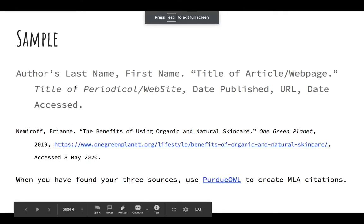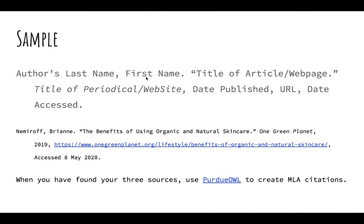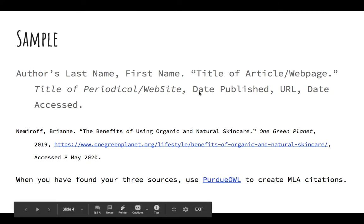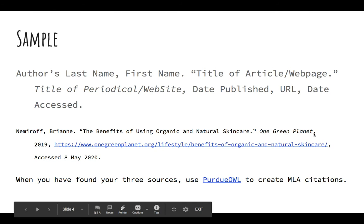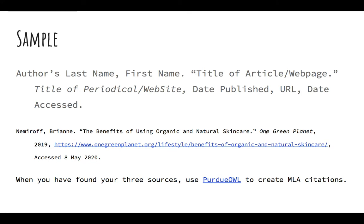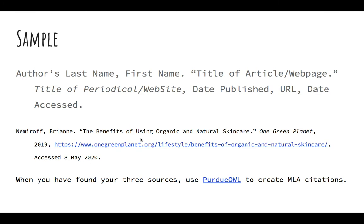Looking at the sample, this is what we're looking for: author's last name, first name — Nemiroff, Breanne. We have 'The Benefits of Using Organic and Natural Skin Care' as the title of the web page. Then One Green Planet was the website, so that's why that's italicized. 2019 is the date, I copy and pasted the URL — you can leave the hyperlink — and then the date accessed. So this MLA works cited citation is now completed, and this will eventually go on my assignment document.